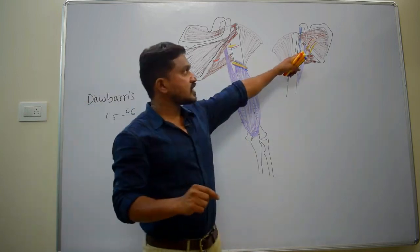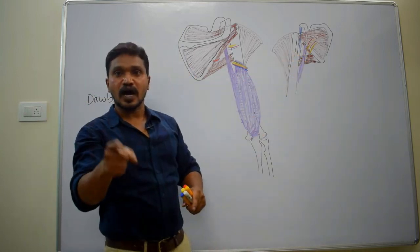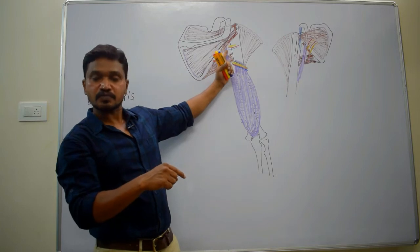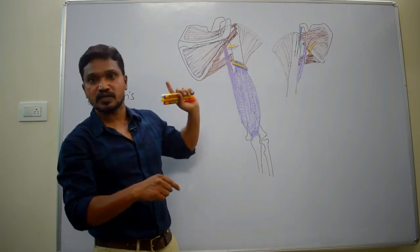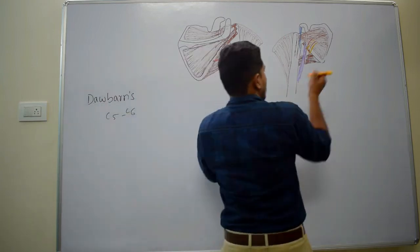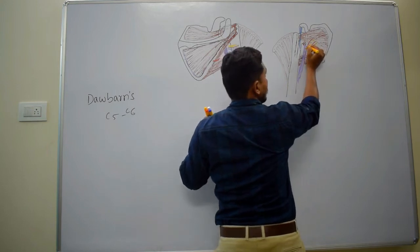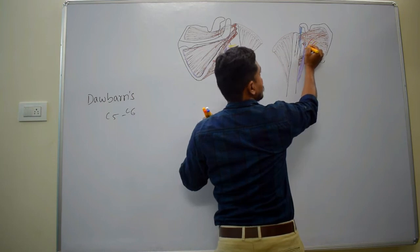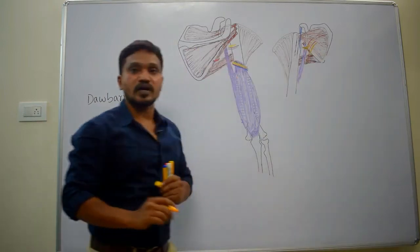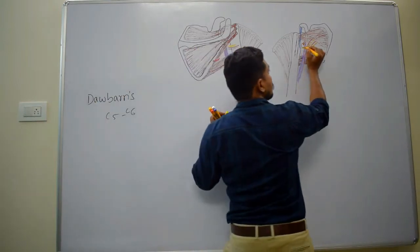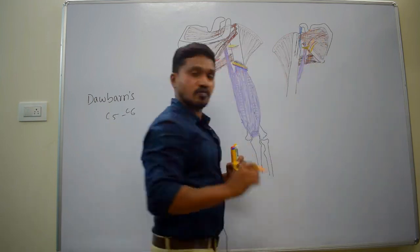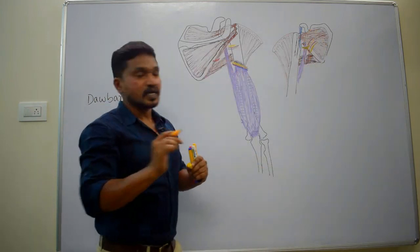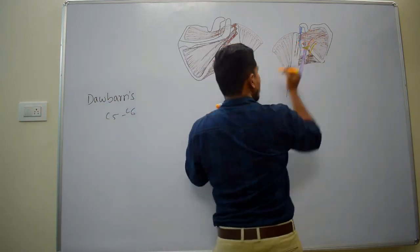From here, the axillary nerve has to leave the axilla and come posteriorly. Because of that, the axillary nerve winds around the inferior border of the subscapularis muscle and enters into the quadrangular space.